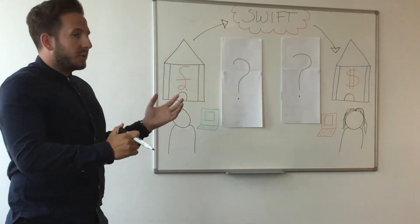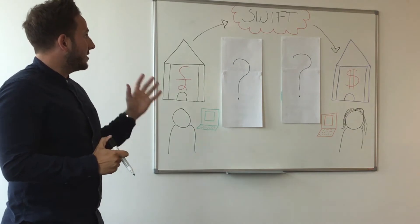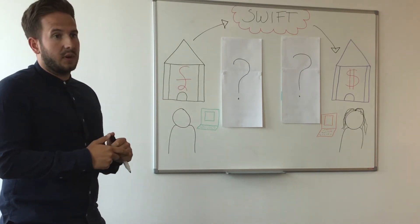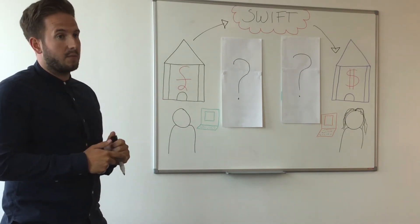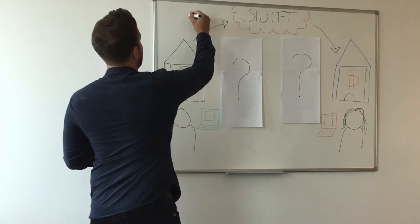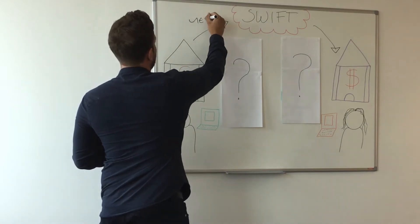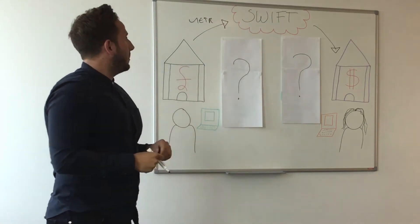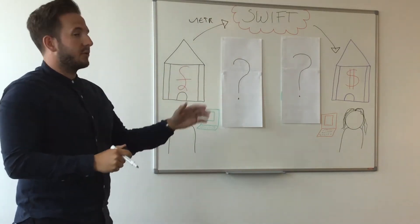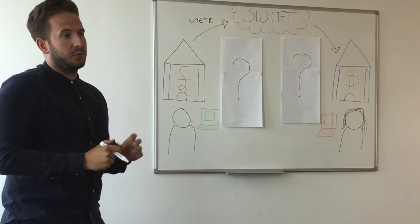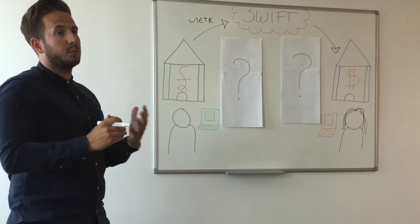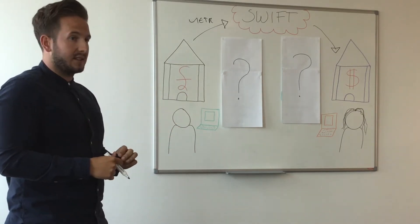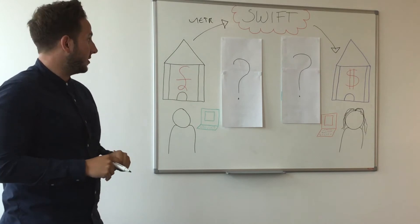What SWIFT GPI brings to this is by introducing something called a unique end-to-end transaction reference, which we call a UETR. We have a means of tracking that payment all the way through the cycle, and SWIFT GPI can expose this payment flow through to the banks and their corporate customers.